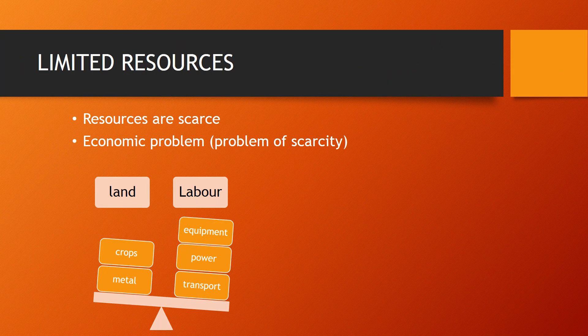As individuals, we seem to have unlimited needs and wants. However, the resources that we have are not enough to satisfy all these needs or wants. All the items that are used to produce goods and services are called resources. There are many different kinds of resources, for example land, labour, transport, water, animals, equipment, machinery, etc. Resources are often limited or scarce because there is a limited quantity available and we cannot always satisfy all our needs.